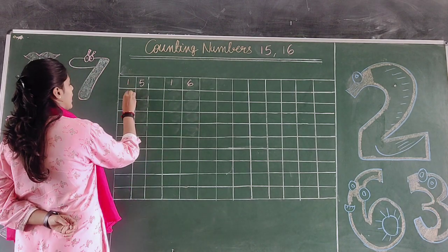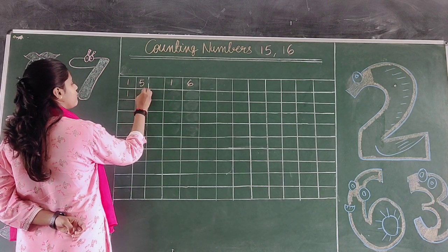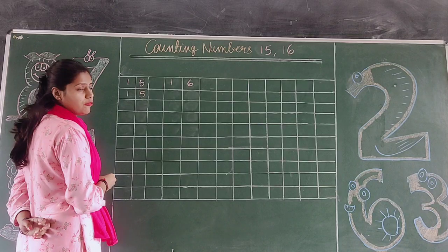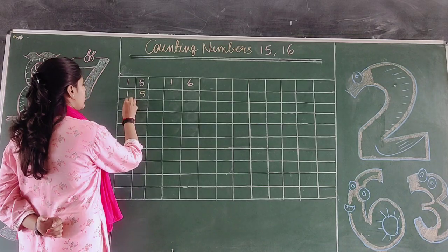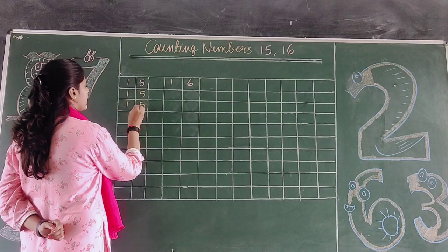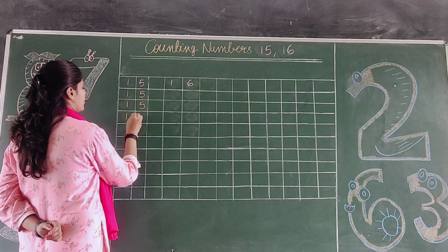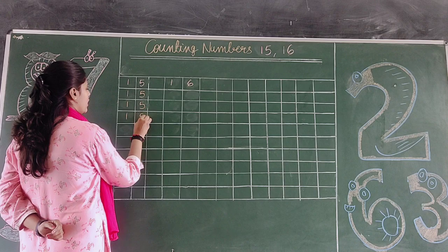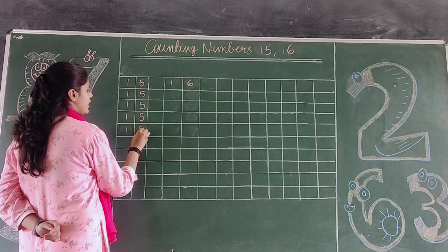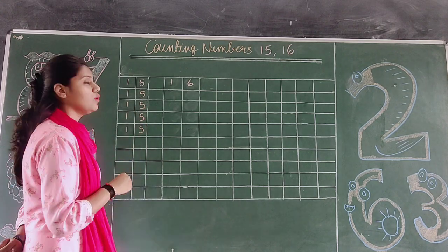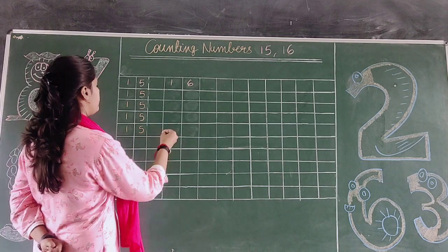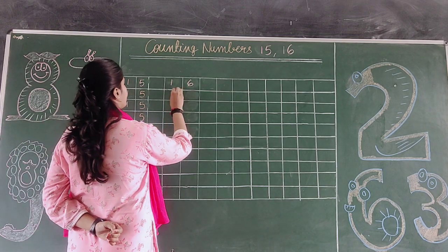So write 1 and 5: 1, 5, 15. 1 and 5 makes 15.